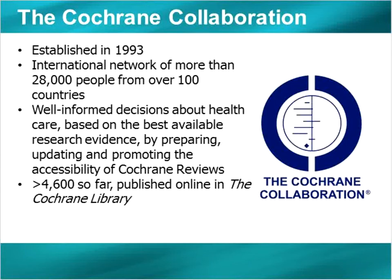When Mona's talking about the collaboration, she's talking about the Cochrane Collaboration, which was established in 1993. Currently, the collaboration has over 28,000 people from over 100 countries working together to prepare, update, and promote the accessibility of Cochrane reviews, which are systematic reviews. The collaboration's aim is to help people make informed decisions about healthcare based on the best available research evidence. Thus far, there are over 4,600 Cochrane systematic reviews published online in the Cochrane Library.